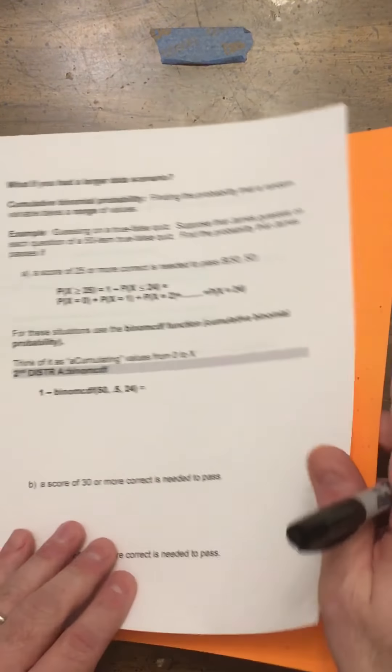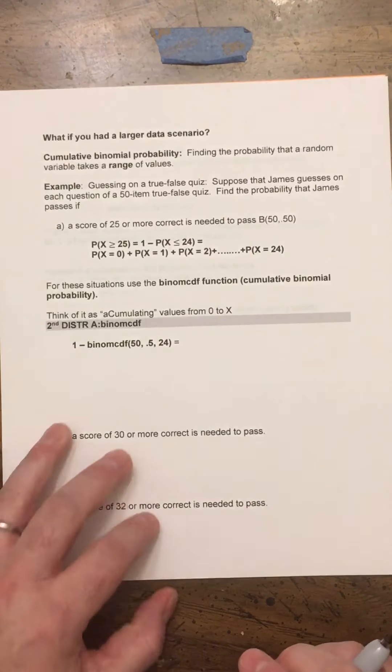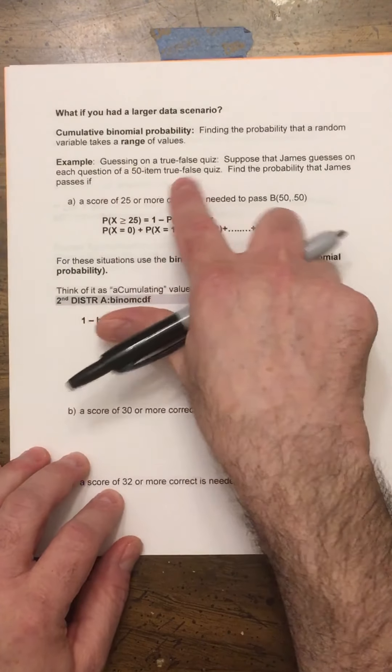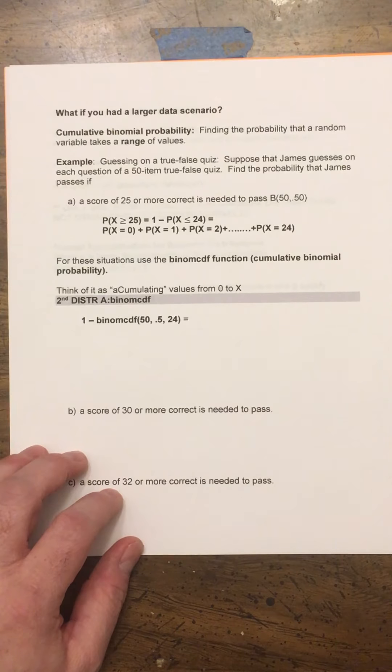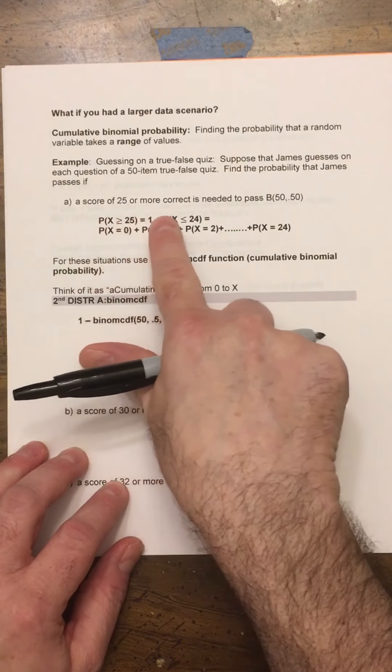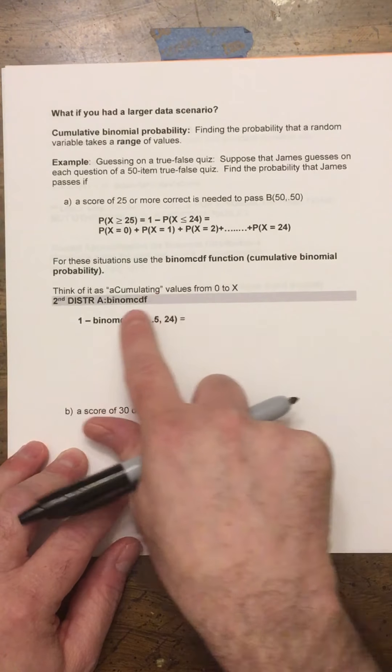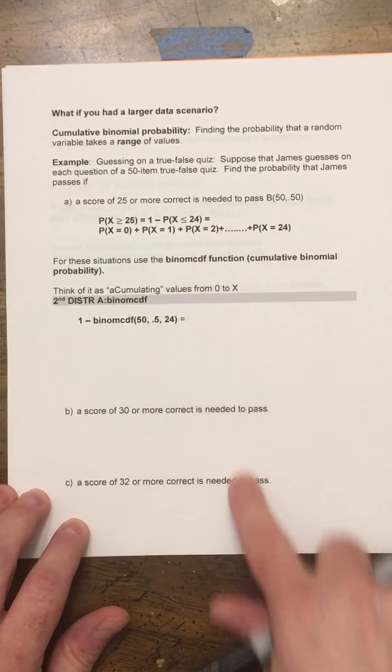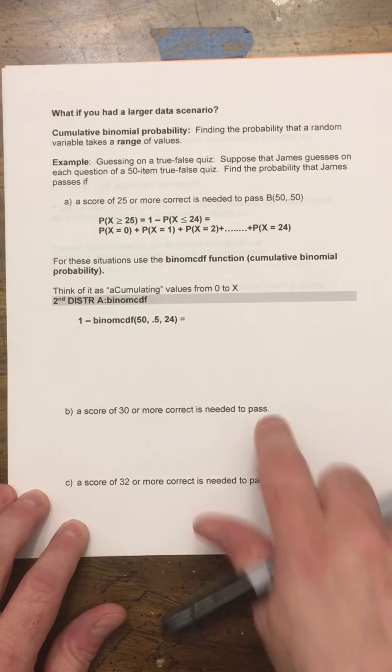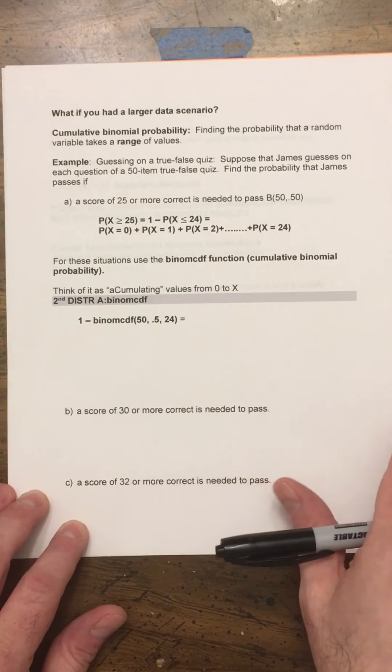There's one last thing we've got to cover. What if you have a larger data scenario? For example, guessing that you're guessing on a true-false quiz, let's say just random guessing. Find the probability that James passes if a score of 25 or more is correct, is needed to pass. But just remember that you could use this binomial CDF. So this is a good example for you to try on your own. It's just like what we were doing with the technology. And I will give you the answers to these in the key.